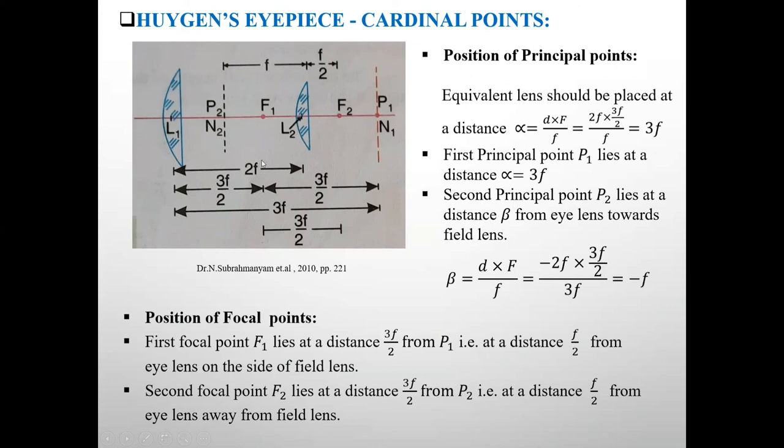That is at a distance F by 2 from eye lens outside of field lens.